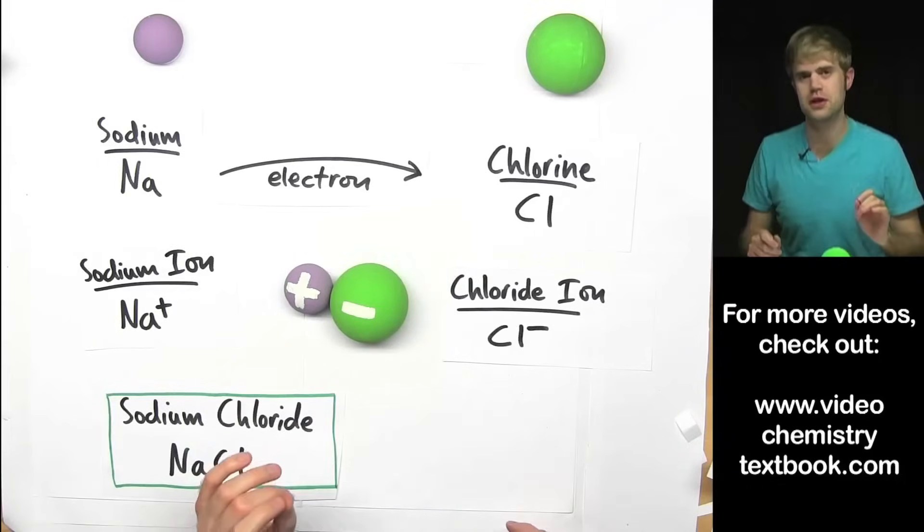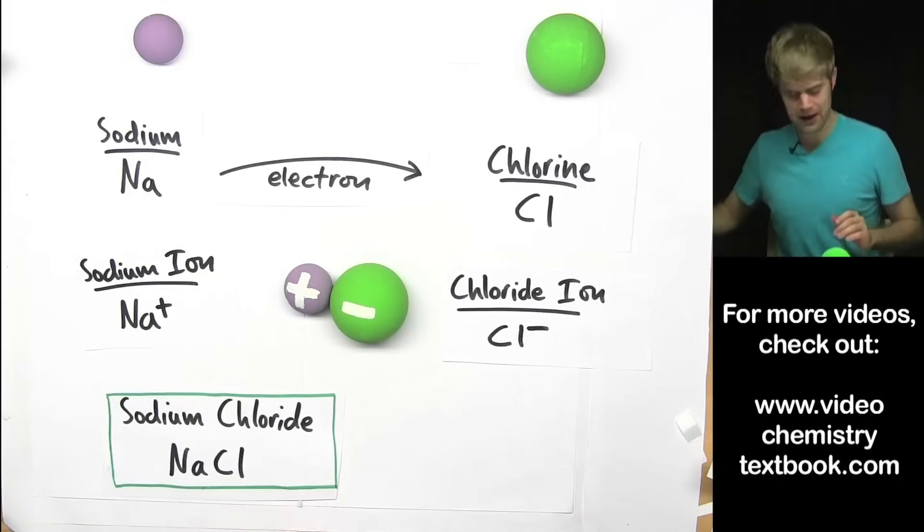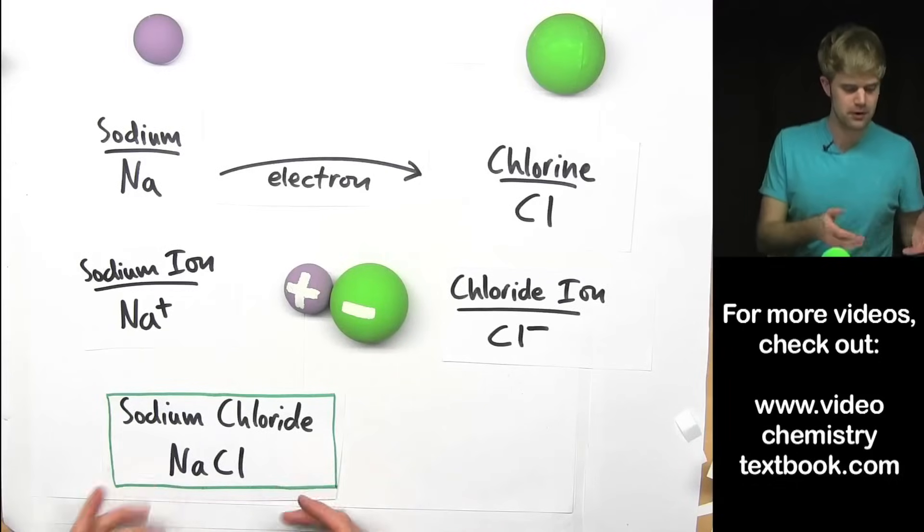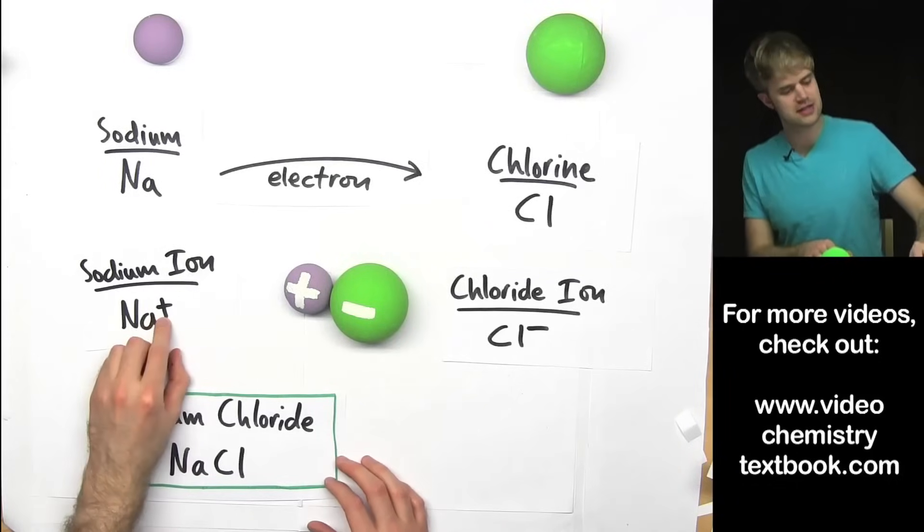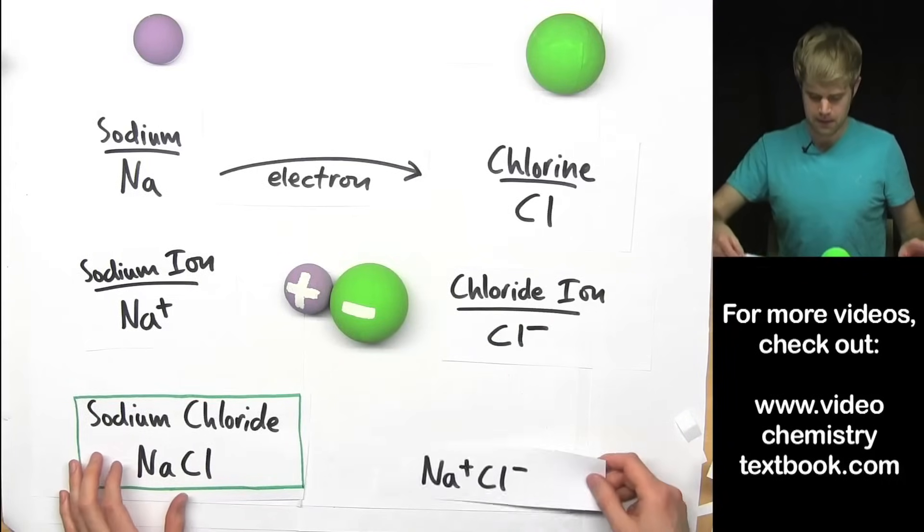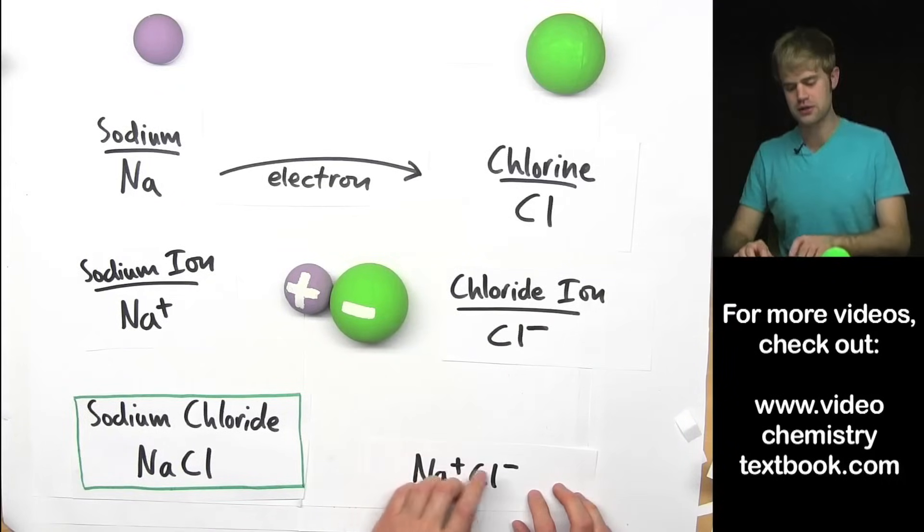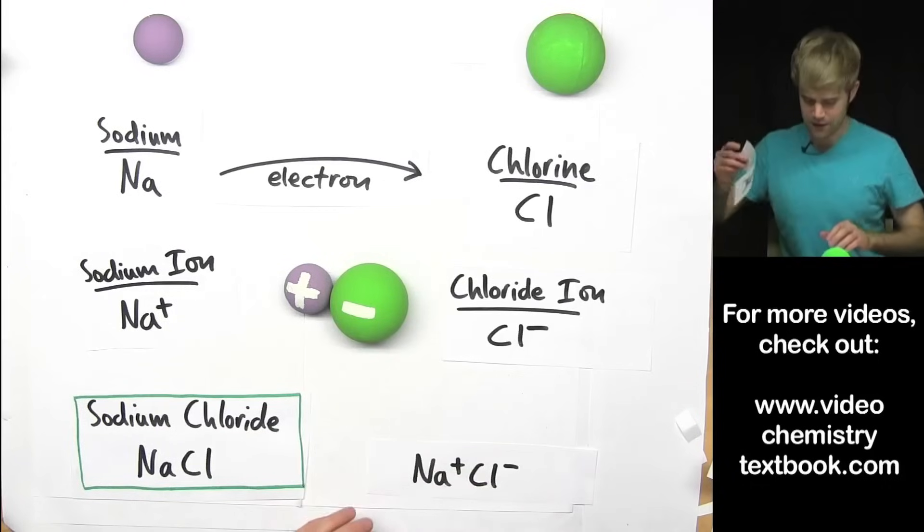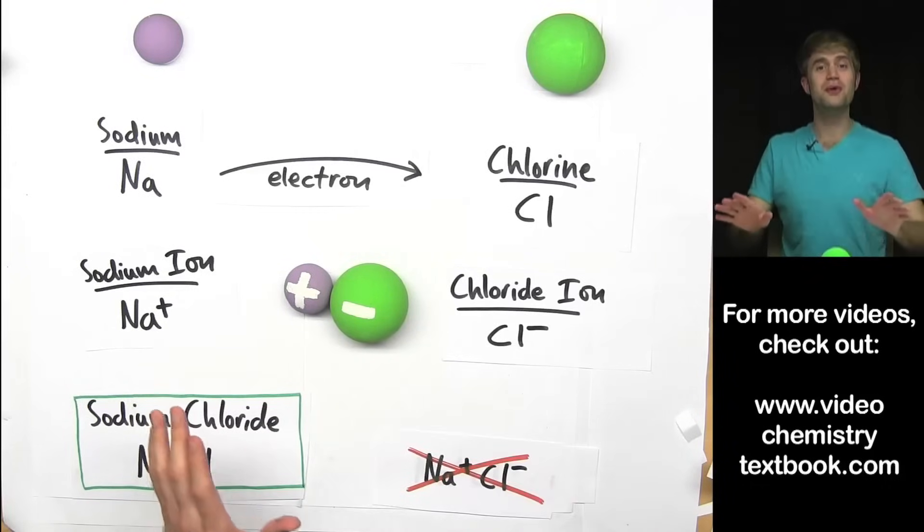Now, here's one common mistake that people make that I don't want you to make. They're writing the formula for sodium chloride and they see that this has a positive charge and this has a negative charge. So often, they'll write it as Na+, Cl-. Now, that's not right. Don't do it.